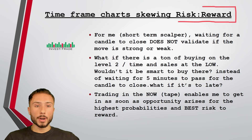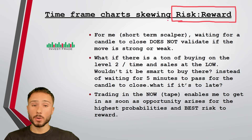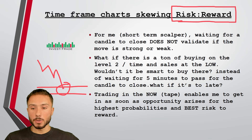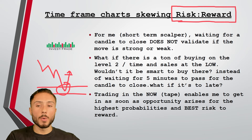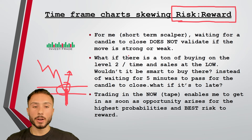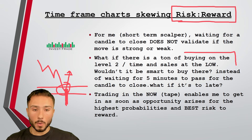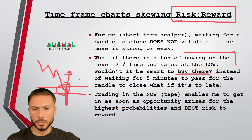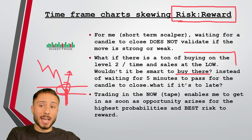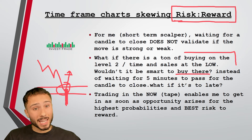Time frame charts skew risk-to-reward, and risk management is the number one aspect to every single trading strategy. Let's say the market's selling off and I want to capitalize on taking the market long at my demand zone. What people will do is see the market hit their level, wait for it to move up, and wait for the five minute chart to show a lower wick — and once the lower wick is put in, they get in just because there's a lower wick. A lot of people have to realize why a lower wick forms — or why a bounce actually occurs — is because there is strong buying at the low. So wouldn't it be smart to buy there as it's happening in that present moment, instead of waiting for the chart to close or show a lower wick? If it's too late, it's going to skew our risk-to-reward.